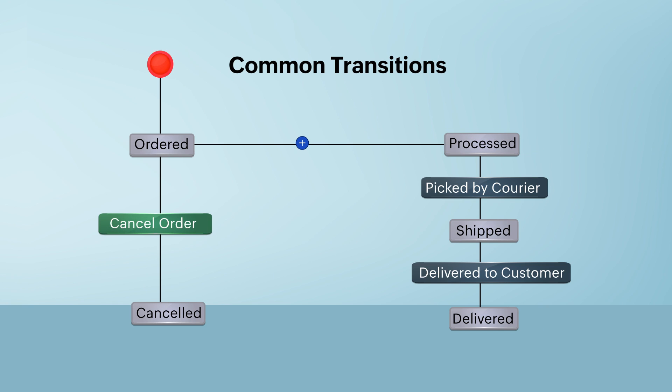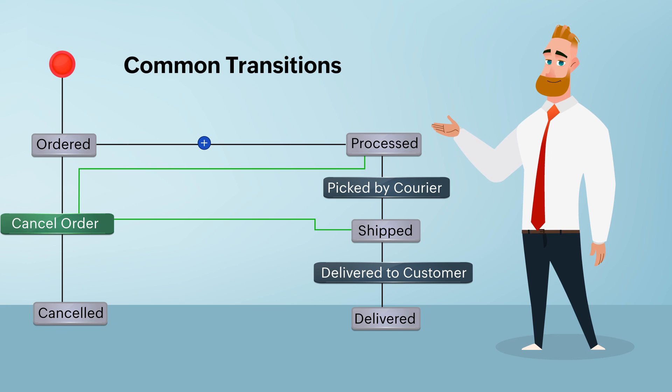if an order needs to be canceled, it can be done soon after the order is placed, processed, or shipped. In this scenario, the transition 'Canceled' can be executed from multiple stages. That's how a common transition works.